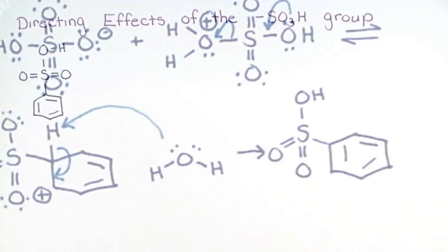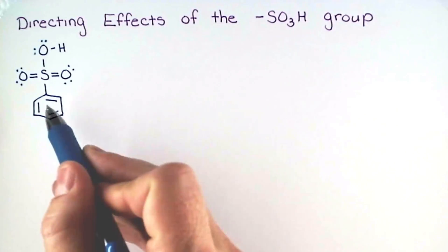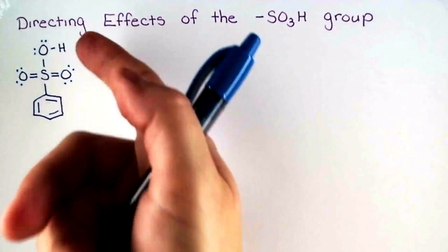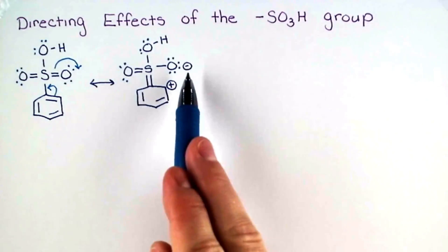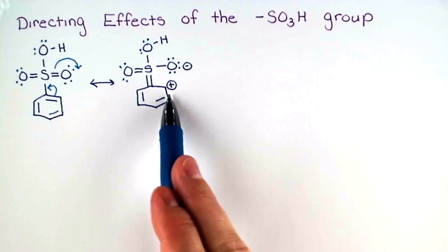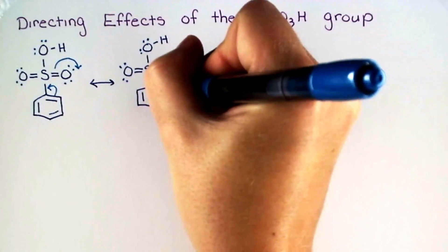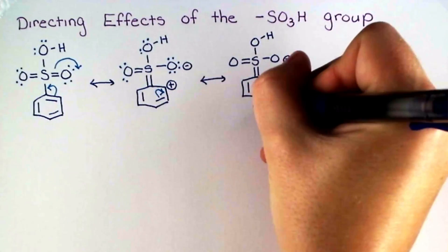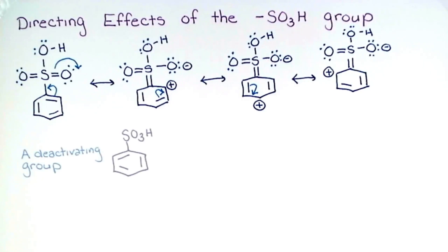Let's take a look at the properties of the sulfonic acid derivative that we've just made. This is an electron withdrawing group. We can show how electron density is pulled out of the ring using one of the sulfur oxygen double bonds. This resonance form has positive character at the ortho position of the aromatic ring. We can continue to push electrons around the ring and show that there's positive character at the para and the other ortho position of this aromatic ring.